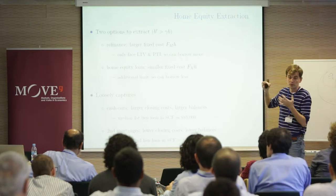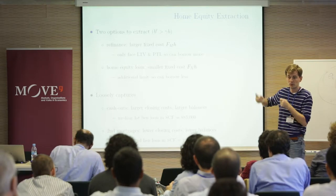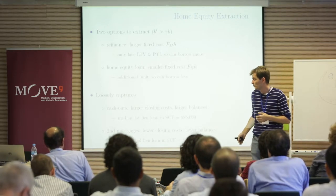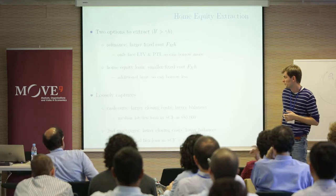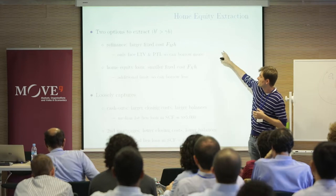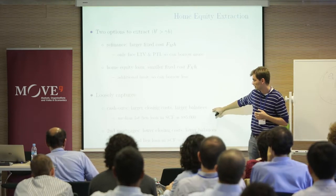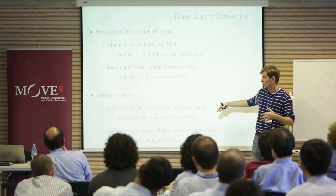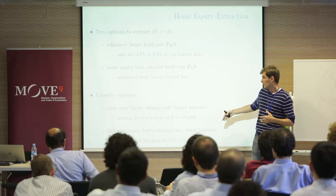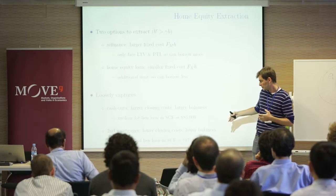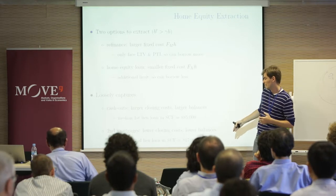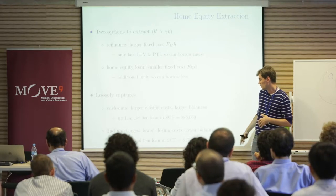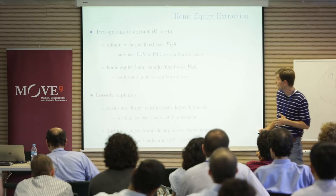One way to model this would be two different interest rates, but we use fixed costs for tractability. This captures the data: the median first-lien loan in the SCF is close to $85,000, so cash-out refinancings are larger and entail larger closing costs. The second lien is about $17,000 — lower closing costs but lower balances.